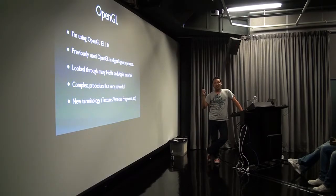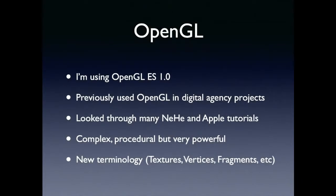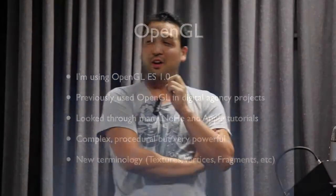So let's talk about the tech instead. I'm using OpenGL ES1, not ES2 — I'll get onto that later. I played around with OpenGL before at an agency I used to work at, where it was actually using Java and Joggle, and some of that logic I recycled by converting it from Java. To refresh my memory, there's a guy called Nehe who wrote a whole bunch of tutorials about how to get into OpenGL, and there are guys who have ported those tutorials to iPhone — they're awesome if you want to get into it. Apple's own documentation is pretty good as well. It's pretty complex, very procedural, but incredibly powerful. One of the hardest things is getting your head around the terminology — like textures, vertices, and fragments, and what they mean.